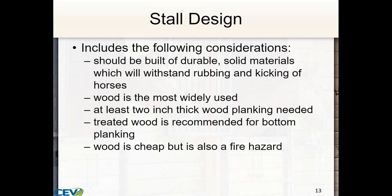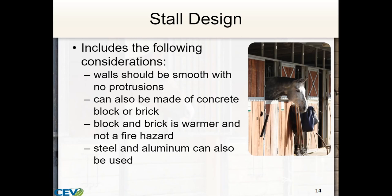Stall design should be built out of durable, solid materials that will withstand rubbing and kicking. Wood is the most commonly used for stall walls and should be at least two inches thick. It's recommended that at least the bottom half be treated wood, because that's where they'll urinate and water will spill, making it most likely to rot. Wood is cheap but is also a fire hazard. Walls should be smooth with no protrusions. You could also use concrete or brick — block or brick is warmer but not a fire hazard. Steel and aluminum can also be used but get expensive quickly.